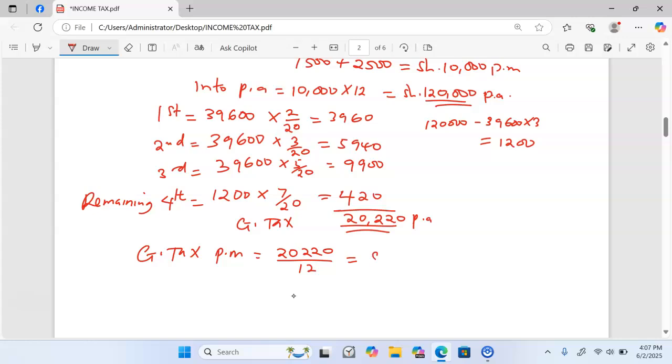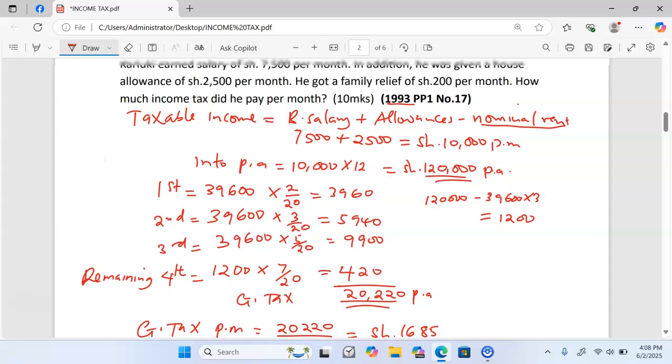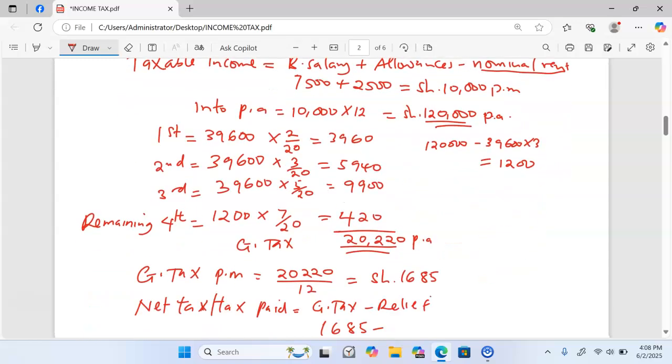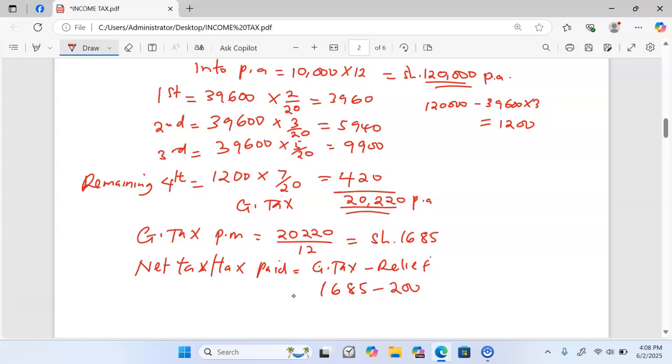From there now we were supposed to get the net tax or simply the tax paid. For us to get the tax paid also known as PAYE, we take the gross tax we minus relief. Remember the gross tax was 1,685 minus the relief. From the question the relief given is 200, and this one gives us the net tax of 1,485.